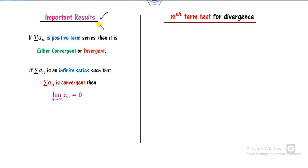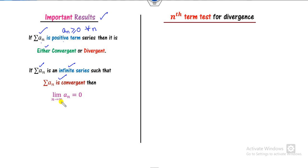One of the most important results for infinite series of positive terms: whenever A_n is greater than or equal to zero for all natural numbers n, the series is either convergent or divergent — it can never be oscillating. Furthermore, if the infinite series is convergent, then the limit of A_n must be zero. This is necessary, but the converse is not true.